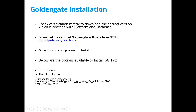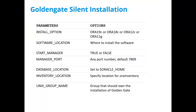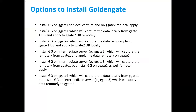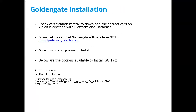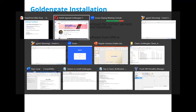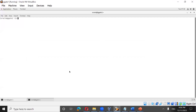For Oracle Golden Gate installation, there are two ways to do it: either GUI installation or silent installation. You can do either of those. Let us see how we proceed with installing the software.